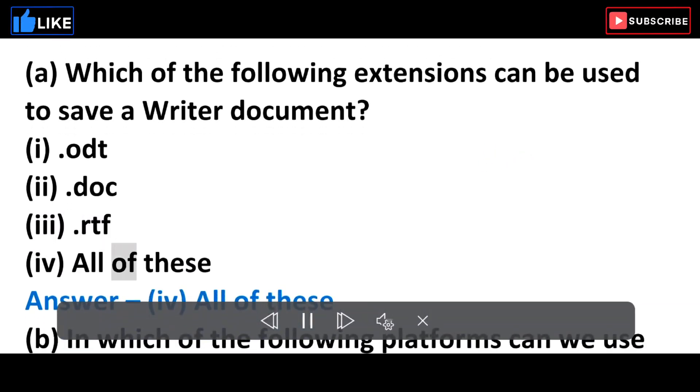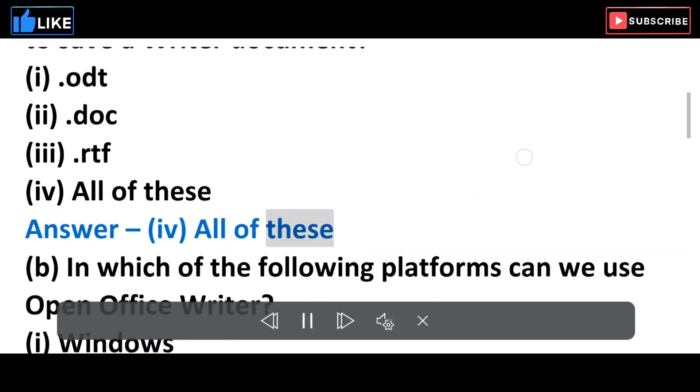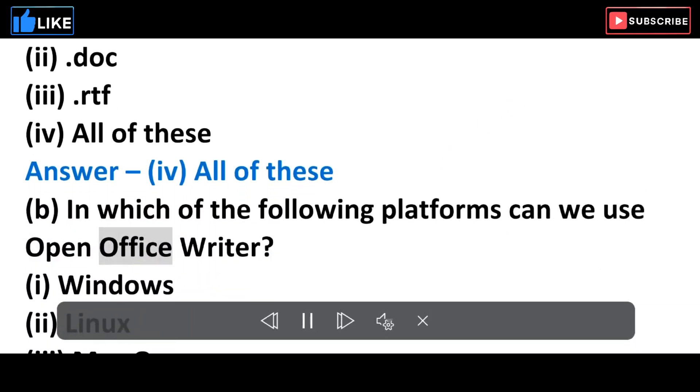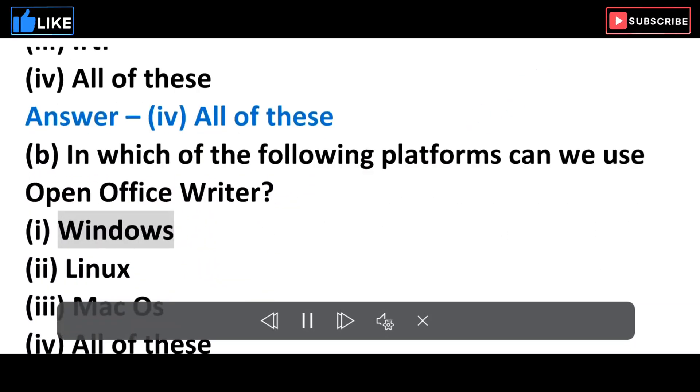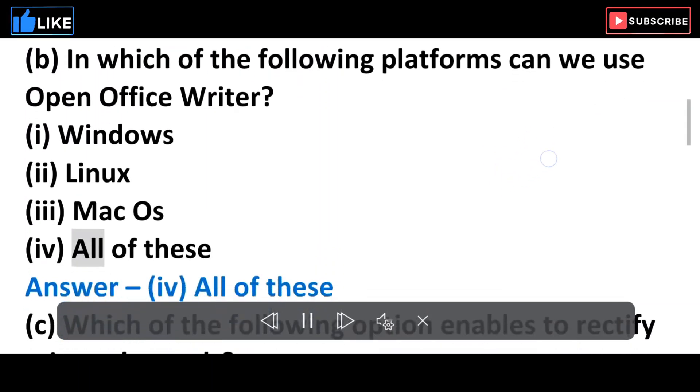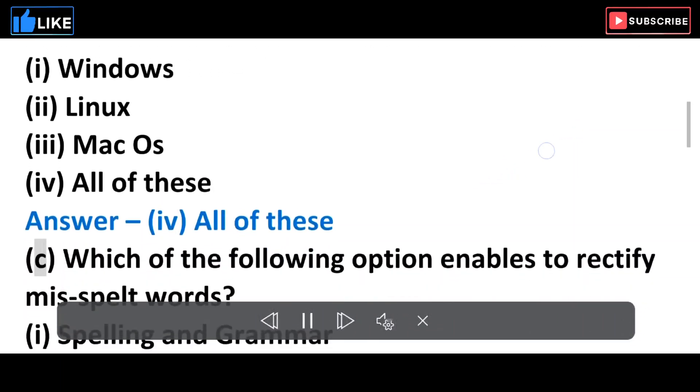Answer: (iv) All of these. B. In which of the following platforms can we use Open Office Writer? (i) Windows (ii) Linux (iii) Mac OS (iv) All of these.